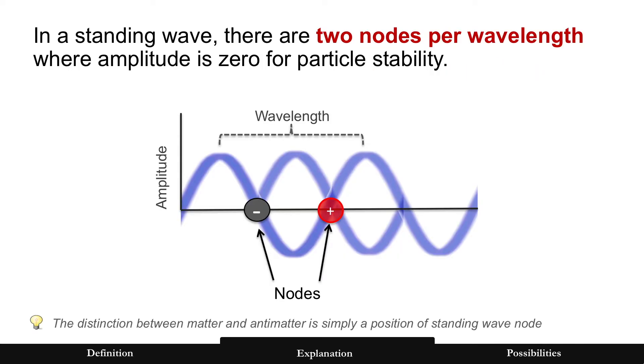Now in a standing wave, which is what particles are, standing wave has two nodes per wavelength where amplitude is zero, and that's the rule for motion, is to minimize wave amplitude. Well, where is it going to move to? It'll move to a node because that is zero amplitude.